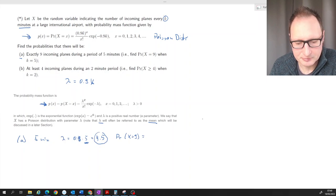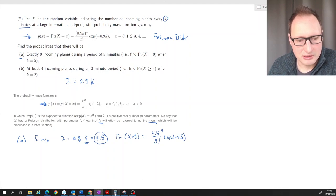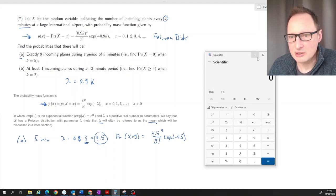So that will be 4.5 to the power of 9 divided by 9 factorial times exponential function of negative 4.5. So let's get a calculator and do this calculation.